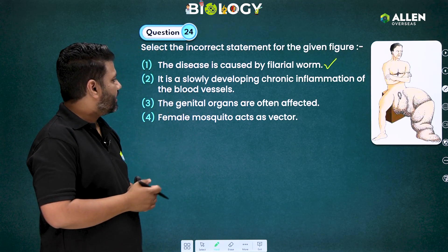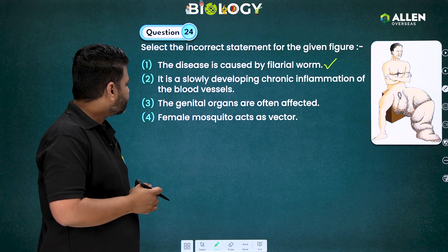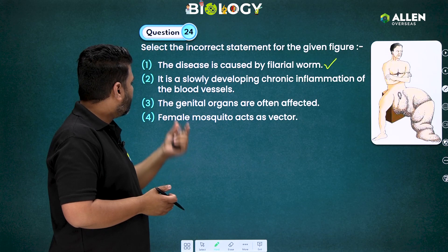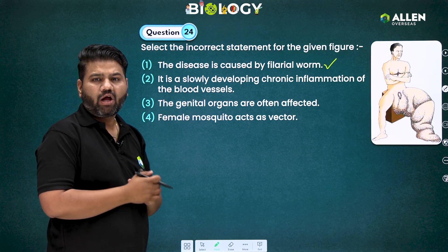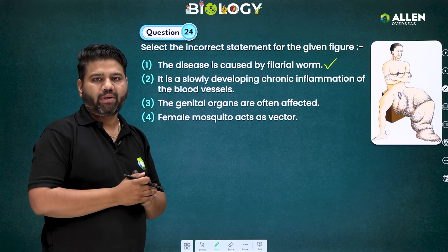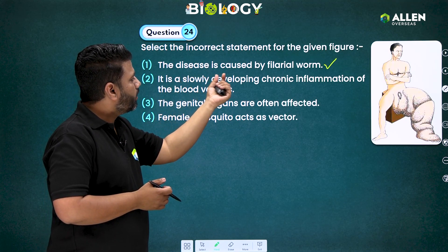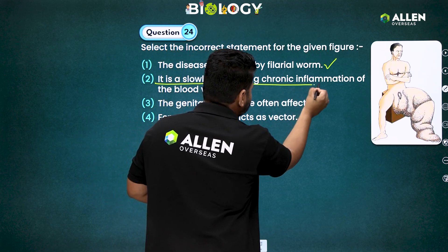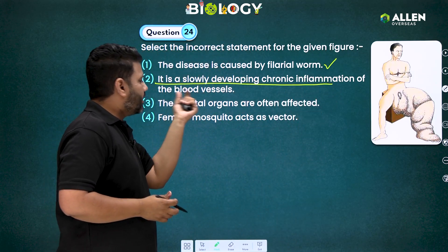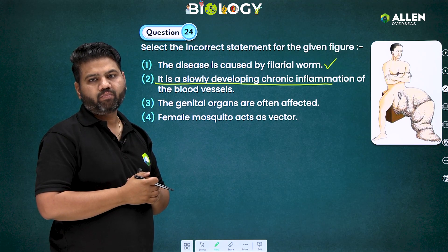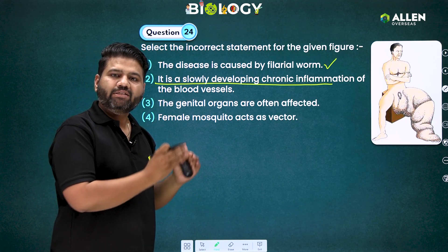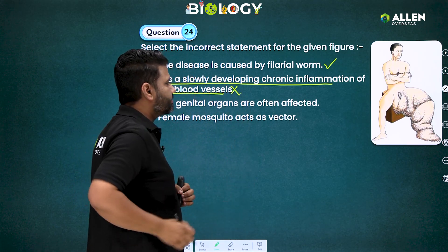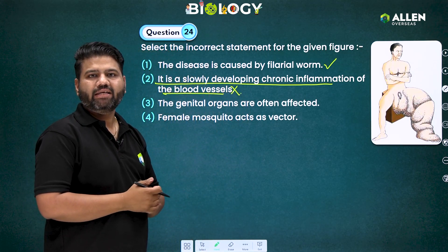The second statement says it is a slowly developing chronic inflammation of the blood vessels. The part about slowly developing chronic inflammation is correct, but the part about blood vessels is wrong — because inflammation is caused in the lymphatic vessels, not in the blood vessels. That's why the second statement is incorrect.